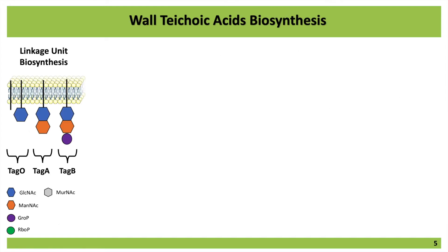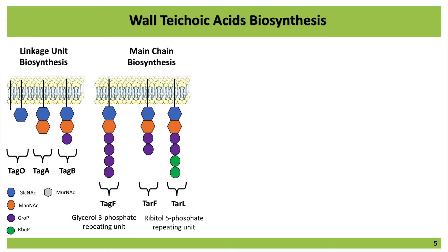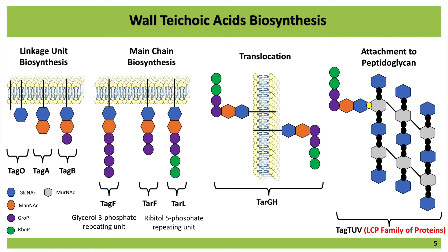The biosynthesis of teichoic acid starts inside the cell. The linkage unit is the first part to be assembled, and is assembled attached to a lipid carrier. Then the main chain is biosynthesized, and here, depending on the repeating unit present in the main chain, two different pathways are followed. Once the polymer is completely assembled, it is translocated across the cell membrane, and once outside the cell, it is attached to the peptidoglycan by the LCP family of proteins.